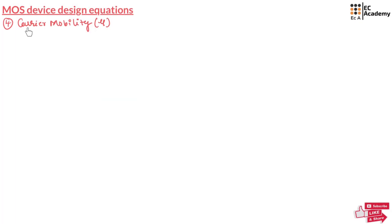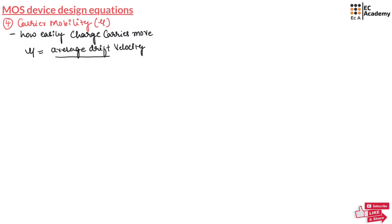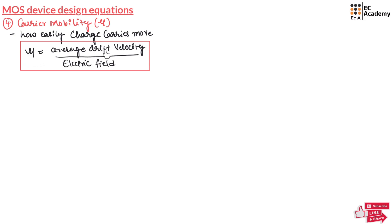Now let us understand carrier mobility. Carrier mobility tells us how easily charge carriers move inside a MOSFET. It can be represented as μ = average drift velocity divided by the electric field.